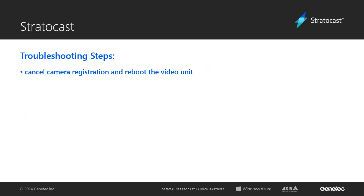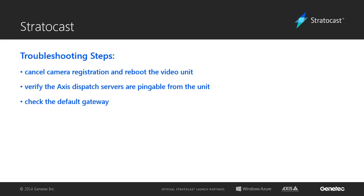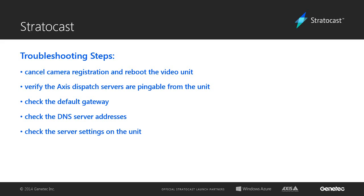The following five steps will be explained in more detail in their own sections. After the unit has restarted, verify that the AXIS dispatch servers are pingable from the video unit. The next step would be to check the default gateway on the video unit. Problems adding units could also be caused by the DNS server addresses on the video unit, or the server settings on the video unit as well. The last step would be to restore the server settings to the default values on the video unit.